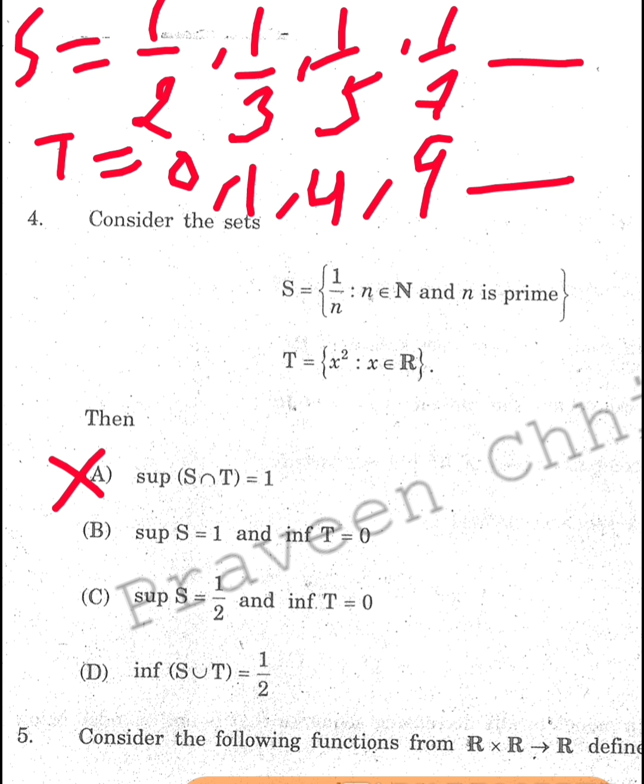If we go through the second option, that is supremum of S is 1, but as I told, 1 is not in S, so this is also wrong. So next is